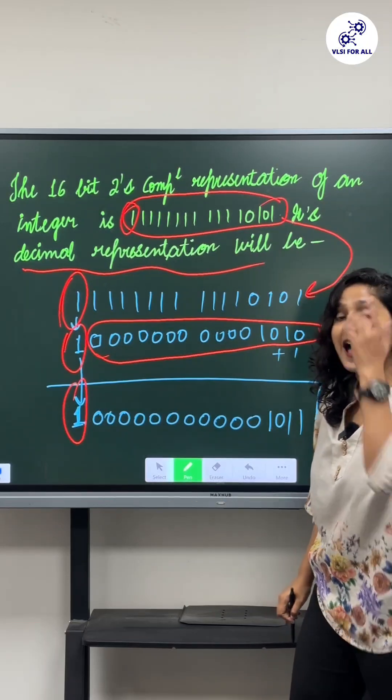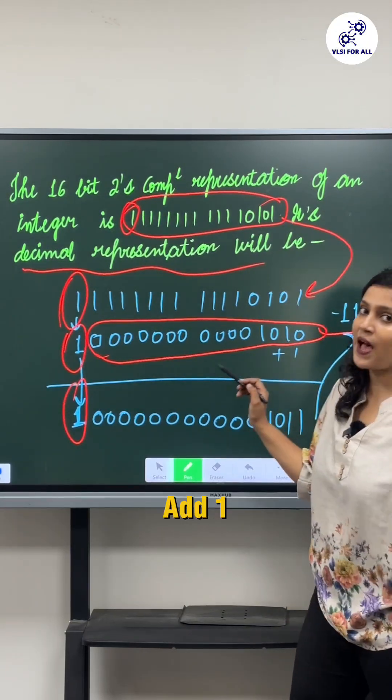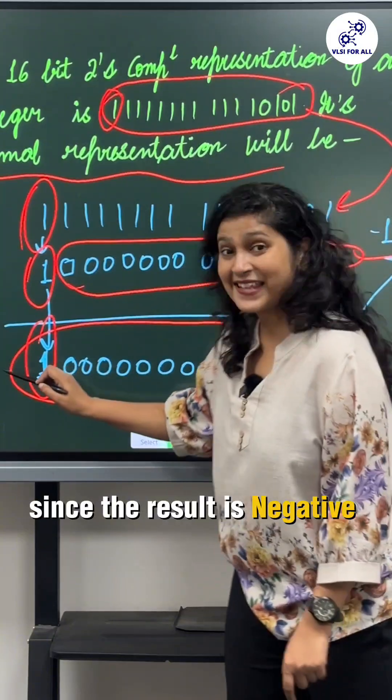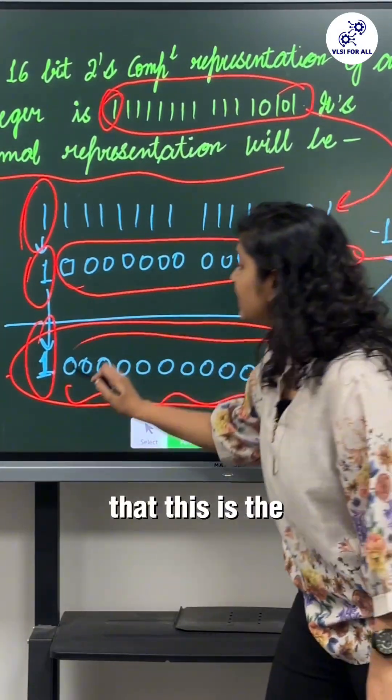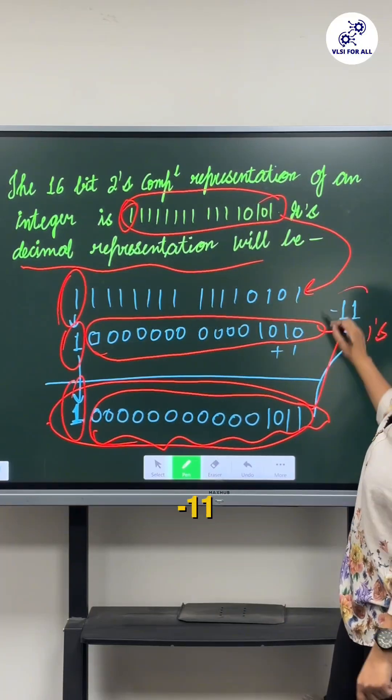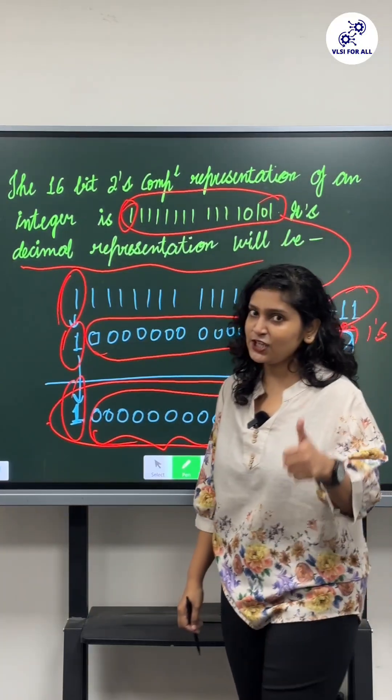After that, you just need to add one, and here is your final result. Since the result is negative, from the rest of the bits you can identify that this is the binary of number 11. So your answer would be minus 11. Thank you.